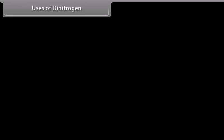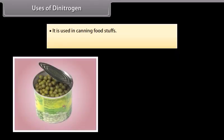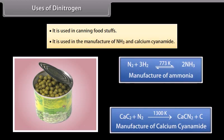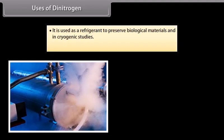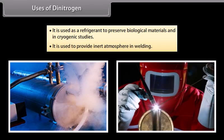Uses of dinitrogen: It is used in canning foodstuffs. It is used in the manufacture of NH3 and calcium cyanamide. It is used as a refrigerant to preserve biological materials and in cryogenic studies. It is used to provide an inert atmosphere in welding.